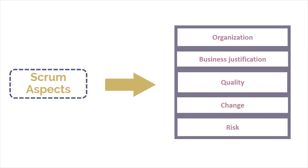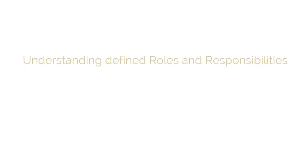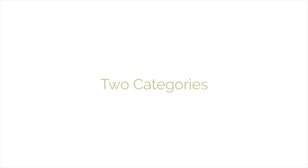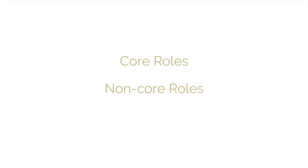We will be discussing all of them one by one, but let's first start with the very first aspect: organization. Let's keep the key concepts under organization aside and try to understand the defined roles and responsibilities in a Scrum project. Defined roles and responsibilities ensure the successful implementation of Scrum. Scrum roles fall into two broad categories: core roles and non-core roles.